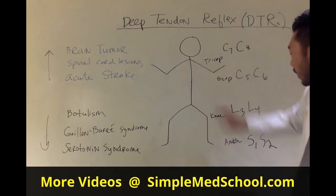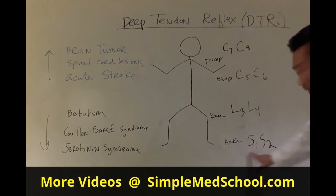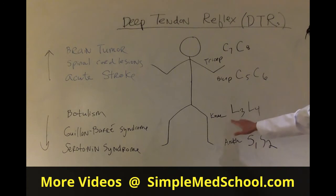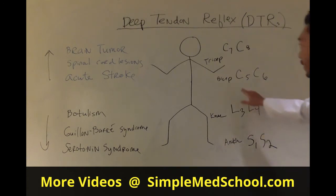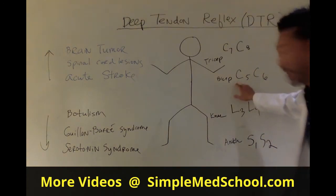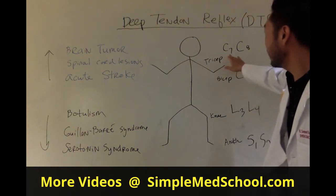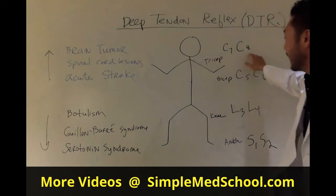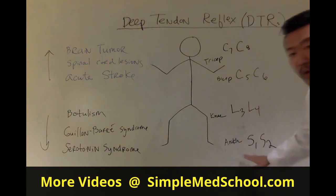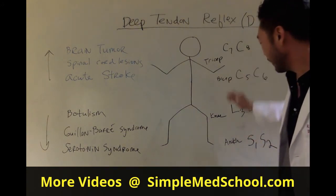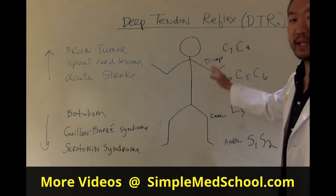Ankle: S1, S2 — sacral 1 and sacral 2. Knee: L3, L4 — lumbar roots L3 and L4. Bicep: C5, C6 — cervical 5 and cervical 6. And finally, tricep: C7, C8. And it's progressively going up — 1, 2, 3, 4, 5, 6, 7, 8 — the ankle, knee, bicep, and tricep.